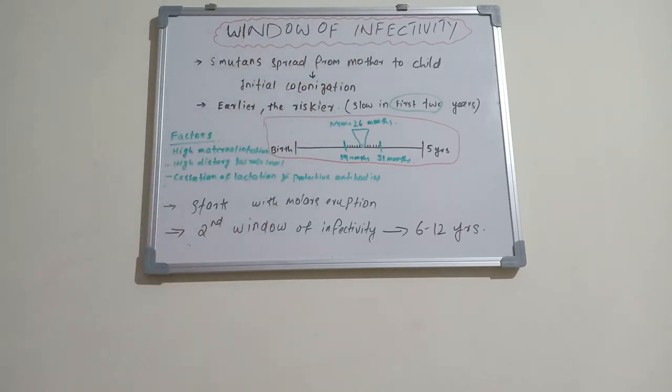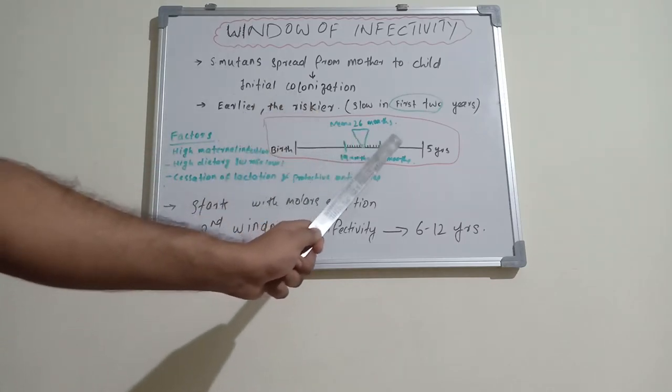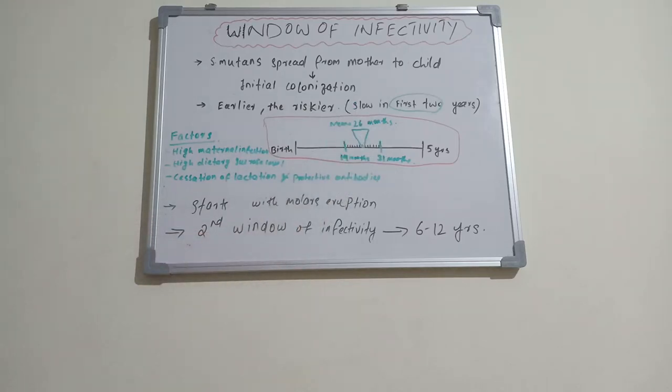Window of infectivity is nothing but the initial colonization of Streptococcus mutans in a child. That happens during 19 to 31 months, and on a mean value, 26 months. So this colonization is important because till that period, around two years, the colonization is negligibly low.